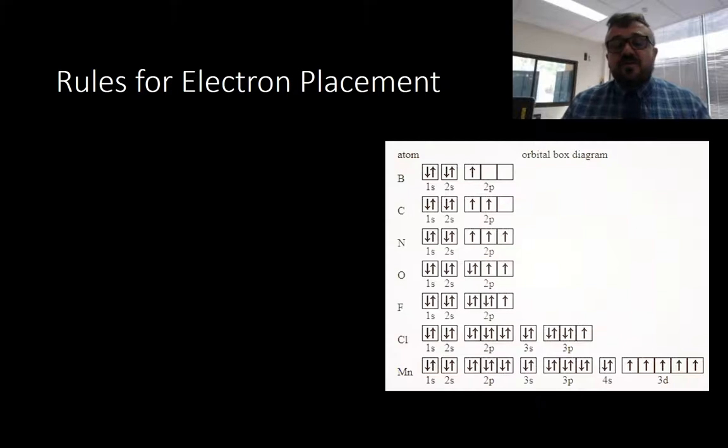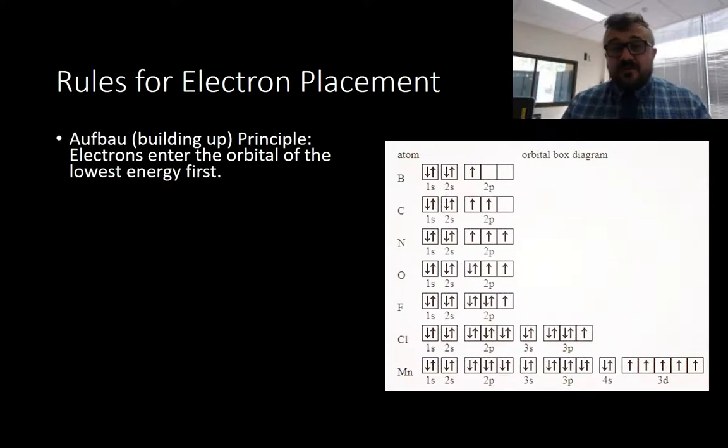Let's look at the rules for electron placement. You should be able to predict where electrons are going to be. There are three rules. The first is the Aufbau principle, which means building up, a German word. Electrons enter the orbital in the lowest energy first. The S shell, the S orbitals, will be filled up first, then the 2S, then the 2P. At no point is there an empty 1S orbital while other orbitals are still being filled up.